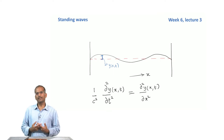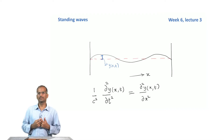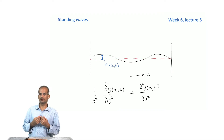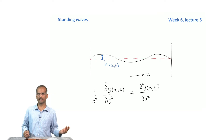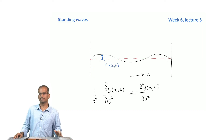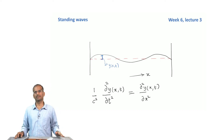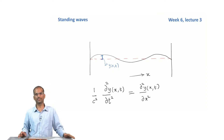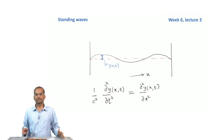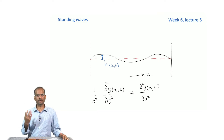Then we went ahead and looked at the solutions of this wave equation. We saw that physically it corresponds to a wave traveling in either the positive x direction or the negative x direction. These are the two possible kinds of solutions the wave equation leads to in one dimension, and they are called progressive waves because they simply keep propagating in one direction.